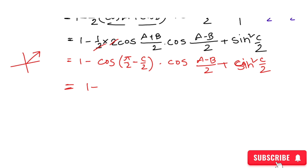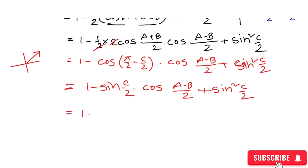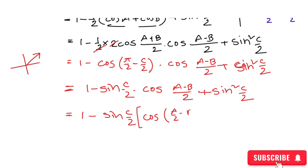Since all values are positive — sine and cosine of these angles are positive. We get sine of (something) times cosine. Because of the 90-degree relationship, sine converts to cosine: cosine of (a minus b)/2, plus sine²(c/2). Now 1 minus... and sin(c/2) is common, and we look at sin(c/2) factored out.